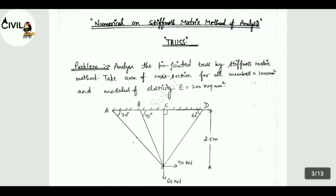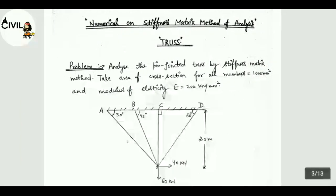You have a truss drawn with points O, A, B, C, D. Angles given: 30 degree, 45 degree, 90 degree, 60 degree. You have a height of 2.5 meter. You have a load of 40 kN and 60 kN in X and Y direction.